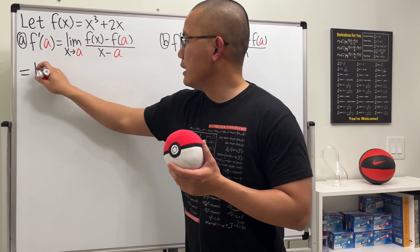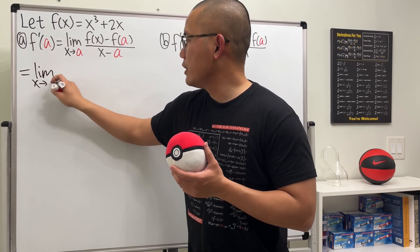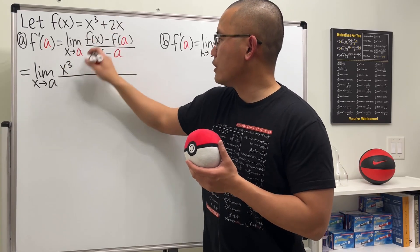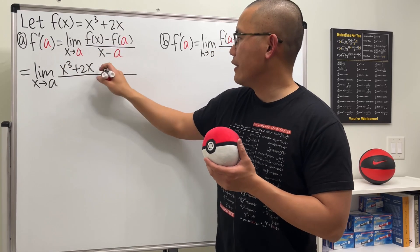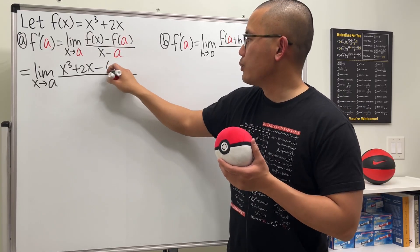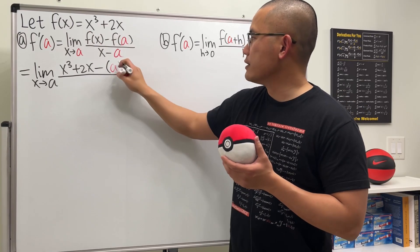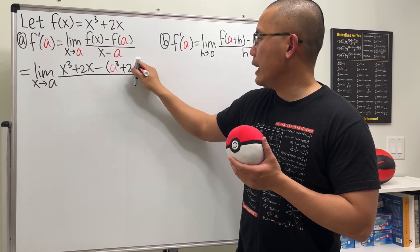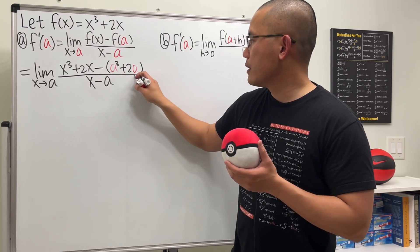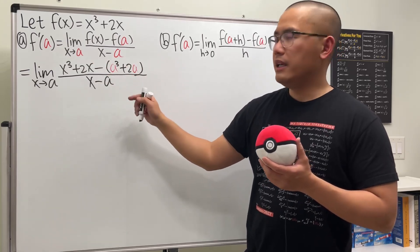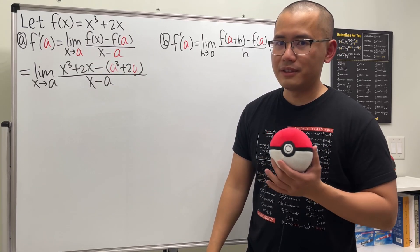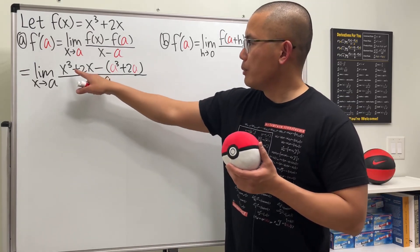Let's get to work. Here's the function. Using Version 1, this is going to be the limit as x approaches a. f of x is x to the third power plus 2x, and then we subtract f of a, so we put a into the function to get a to the third power plus 2a. All of this is divided by x minus a. Looking at the top, there's nothing we can combine directly, but we are about to factor things out.